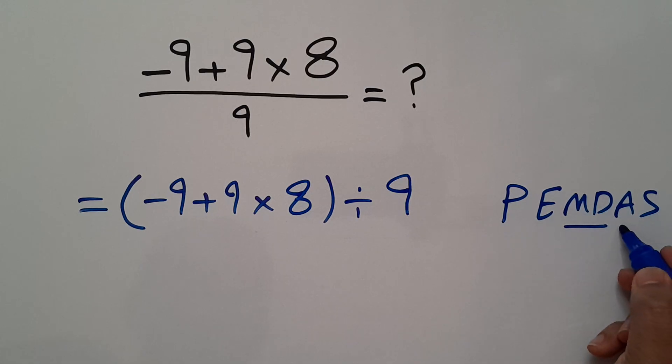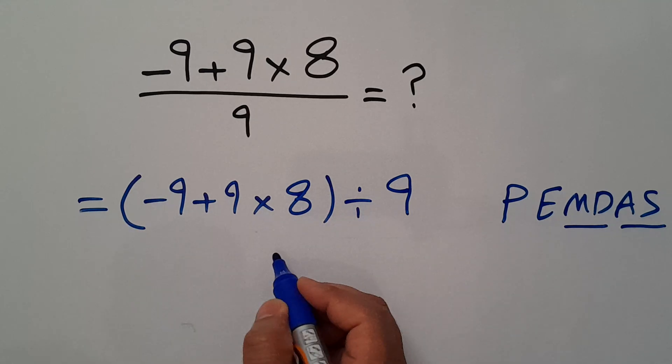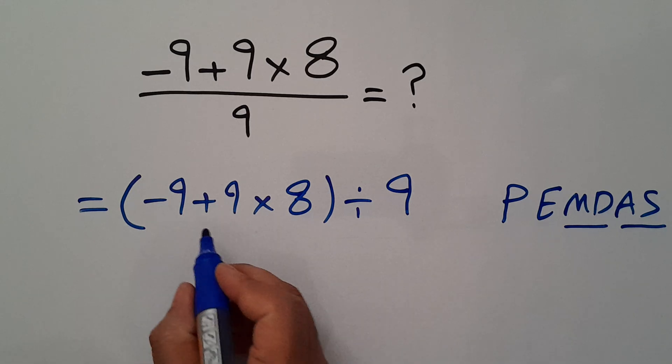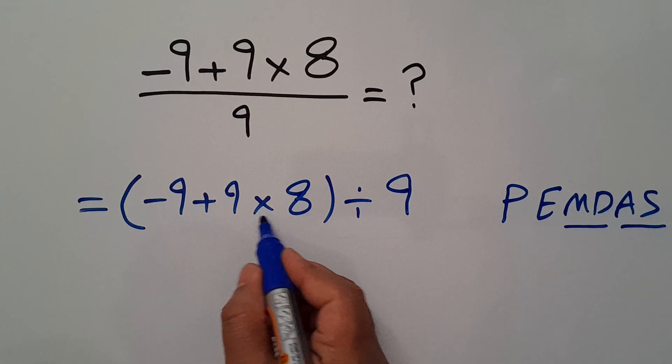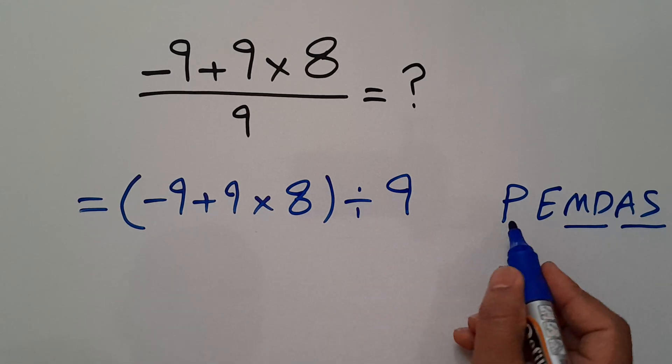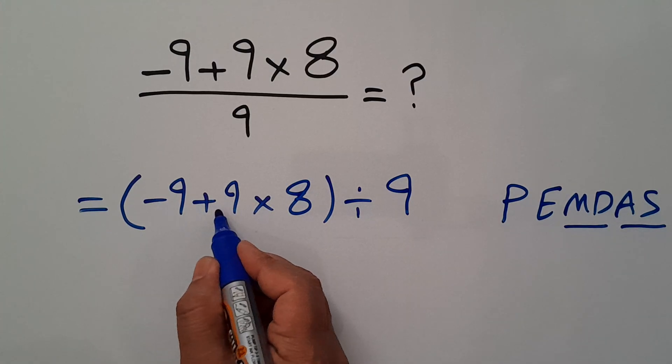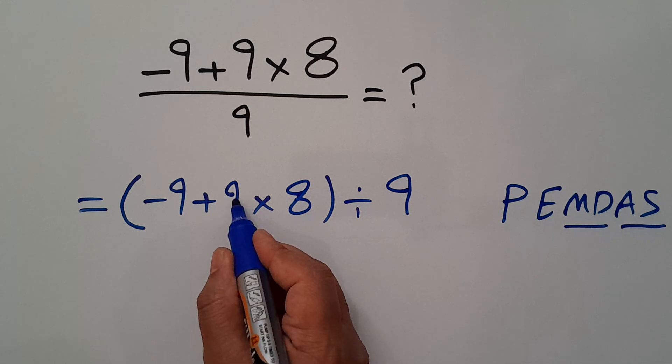Inside these parentheses we have addition and multiplication. According to PEMDAS, multiplication has higher priority than addition, so first we do 9 times 8, which equals 72. So we have parentheses negative 9 plus 72, all divided by 9.